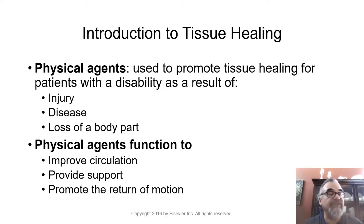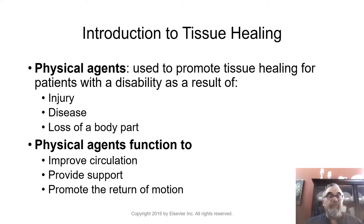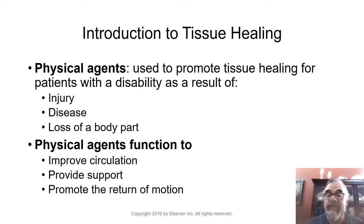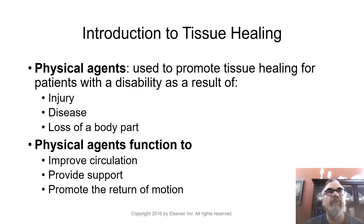Physical agents are used to promote tissue healing for patients with a disability as a result of injury, disease, or loss of a body part. Physical agents function to improve circulation, provide support, and promote the return of motion. When we talk about agents, we're talking about treatments, therapy, walkers, canes, crutches, ice packs, cold packs — things that help with injury, disease, and loss of a body part such as amputation and prosthetics.